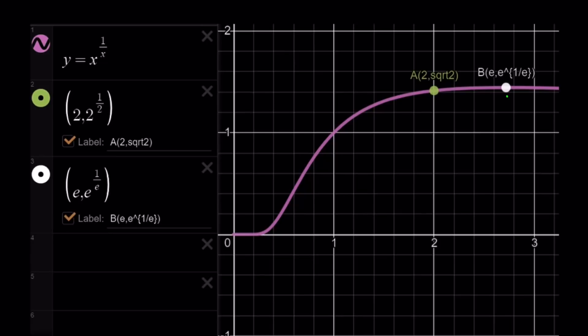I should say, cool. So, it means that the y value at 2 is going to be lower than the y value at e. So, we're looking for the larger value, and that is going to be e to the power of 1 over e in this case.